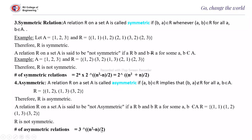The number of asymmetric relations equals 3^((n²−n)/2). The diagonal elements must all be 0. For each pair of non-diagonal elements (a,b) and (b,a), there are three choices: both absent (0,0), or one present and other absent (1,0) or (0,1). So it is 3 to the power of (n²−n)/2. We will stop here and continue in the next video. Thank you.